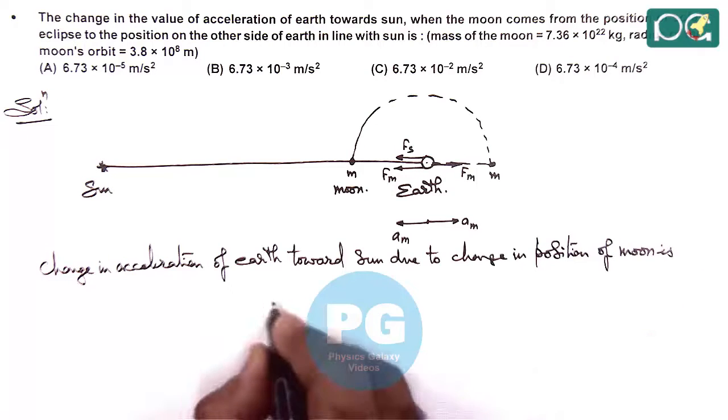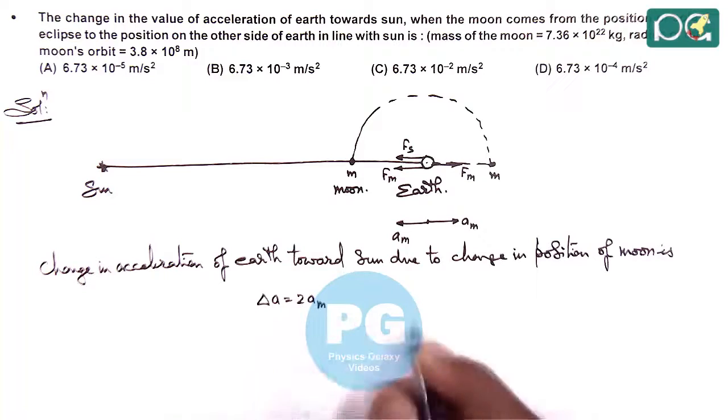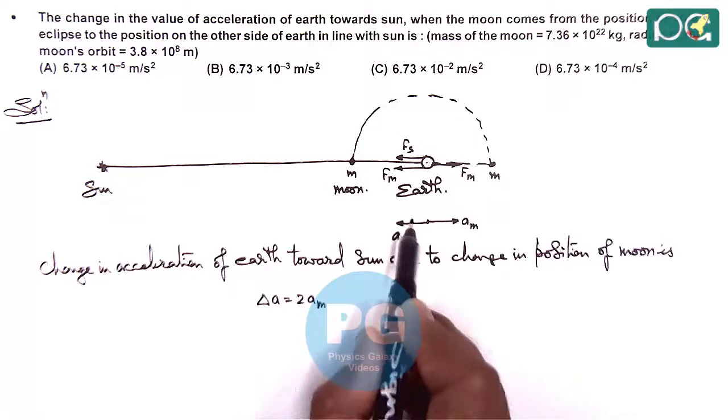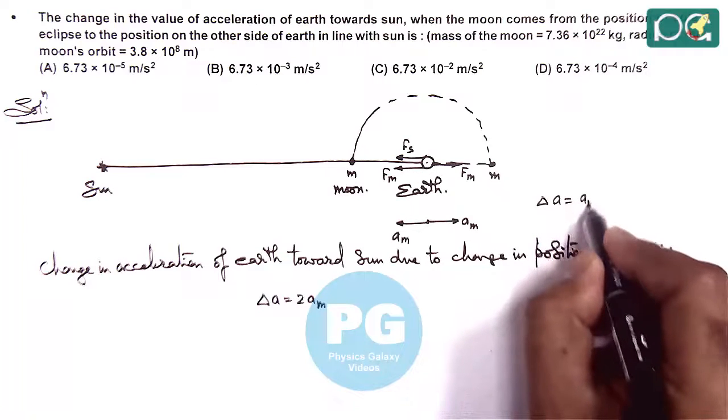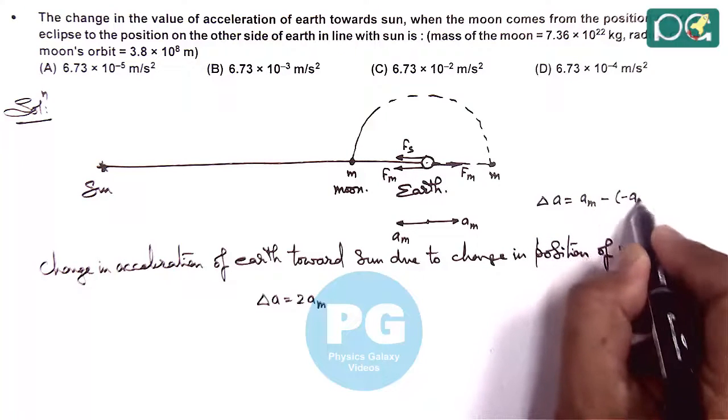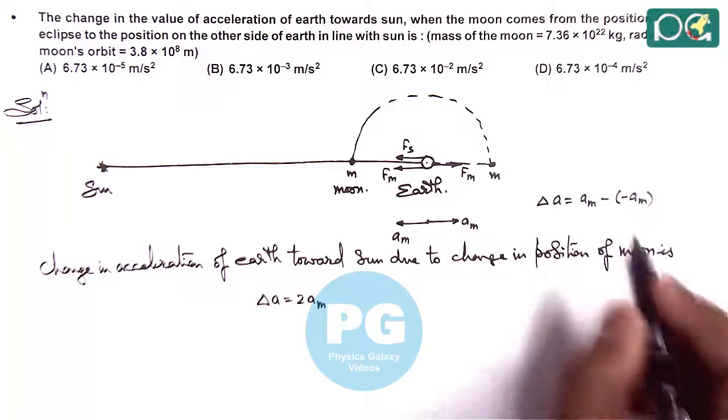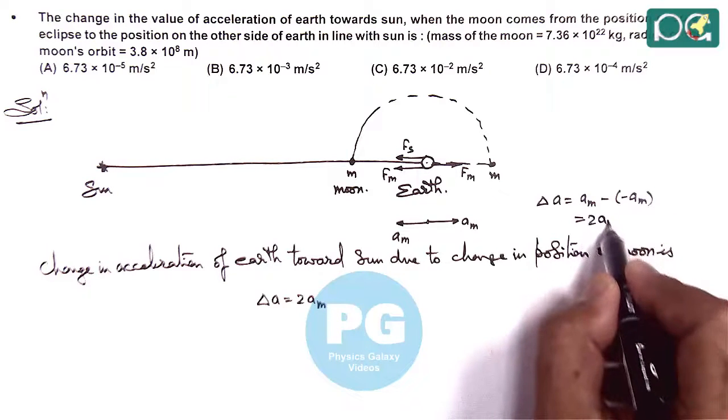Here we can directly write delta A will be twice of acceleration due to moon, because initially it was toward left and finally it is right. So delta A we can write as am minus of minus am vectorially. Now with change in direction it is twice of am.